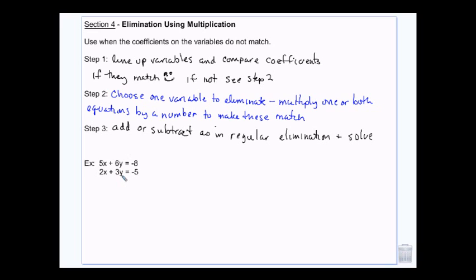And in this case, probably the Y's. Because I can turn a 3 into a 6. Here, I can turn a 5 and a 2 both into a 10. But that means I have to multiply both equations. Does that make sense?